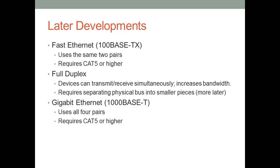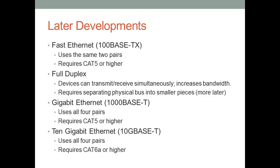Gigabit Ethernet — 1000BaseT — uses all four pairs. There was another standard called 1000BaseTX that used only two pairs like 100BaseTX, but it required Cat6 or higher cabling. Because of the expense and the fact that many people already had Cat5 in place, 1000BaseTX was very unpopular and didn't take off. 1000BaseT won out, though it requires all four pairs. 10 Gigabit Ethernet raises the frequency further, requiring Cat6a or higher.